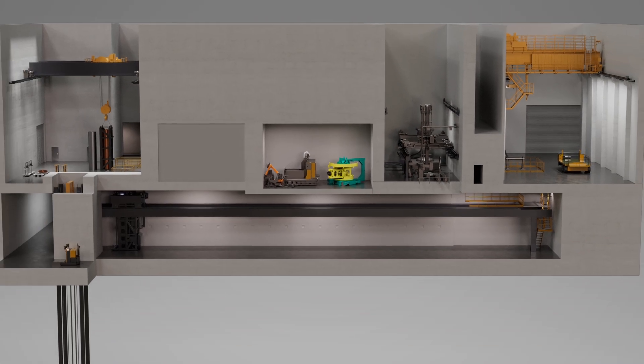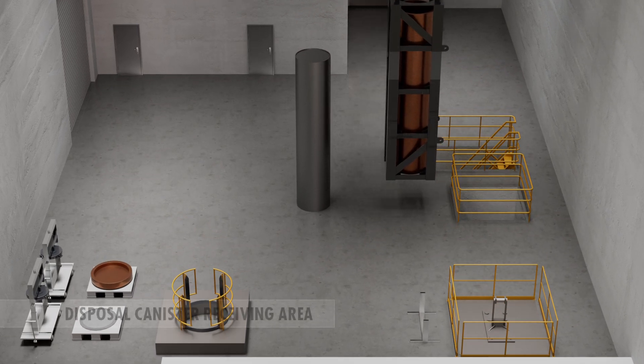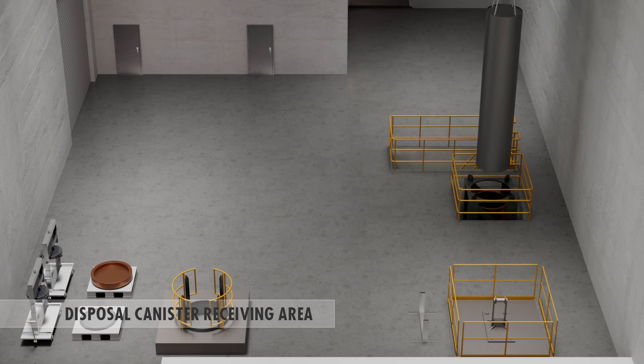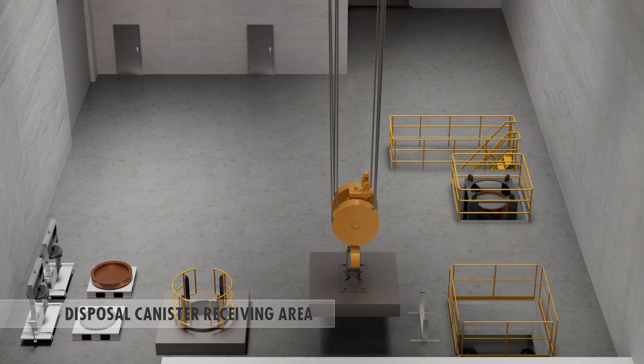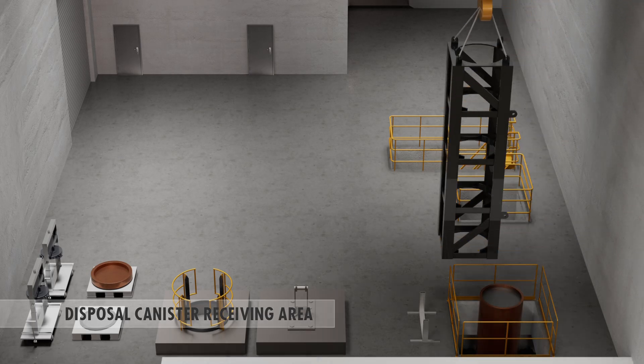Empty disposal canisters arrive from the other end of the encapsulation plant. The cast iron insert of the canister is installed inside a copper tube in the assembly area and lowered into the canister transfer trolley in the transfer corridor.